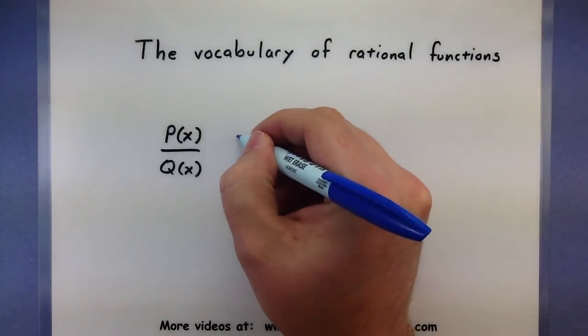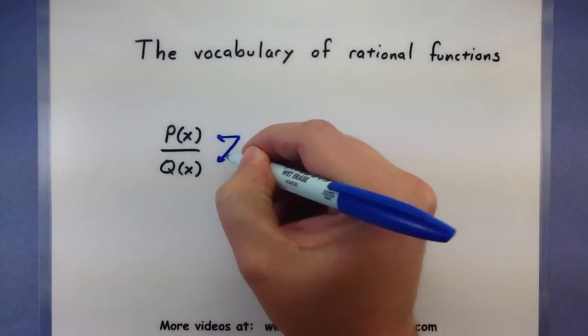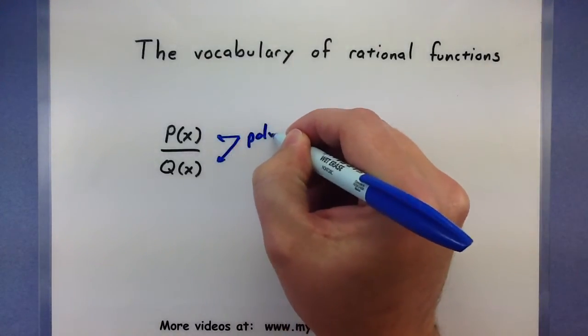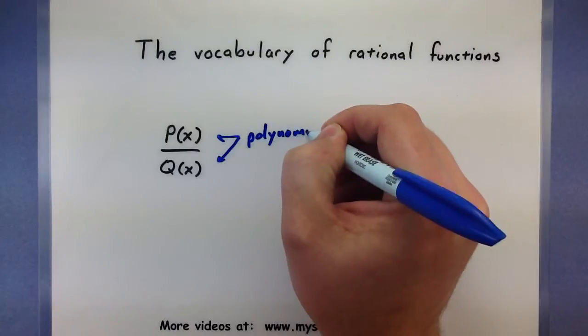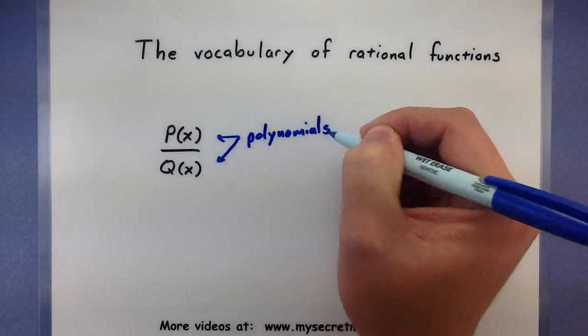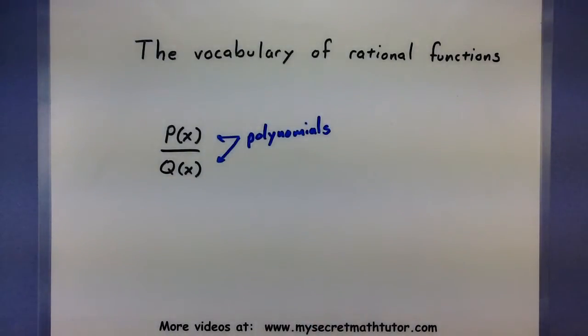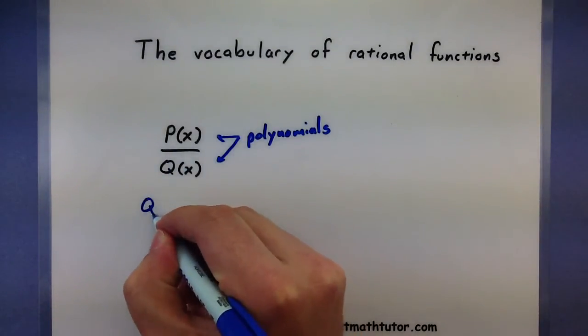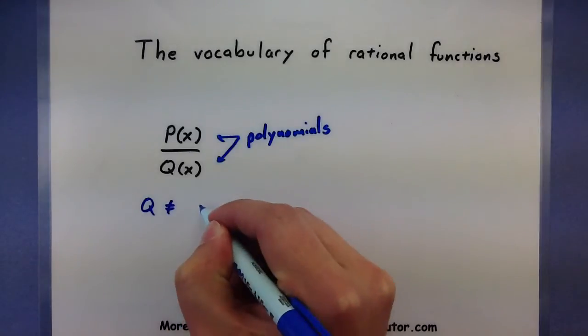The important thing about these two functions is that both of these are polynomials. Now of course any time we work with division, we have to be a little bit afraid of dividing by zero. So one additional requirement is put on our bottom function here, Q. We want to make sure that Q is not equal to zero.